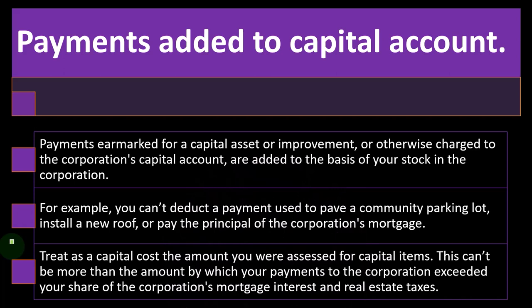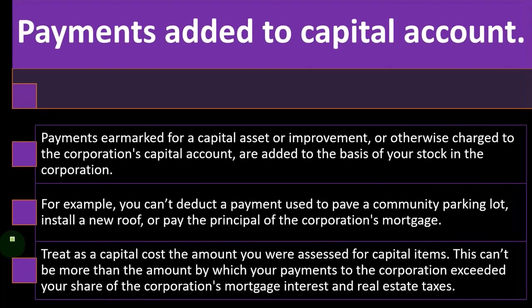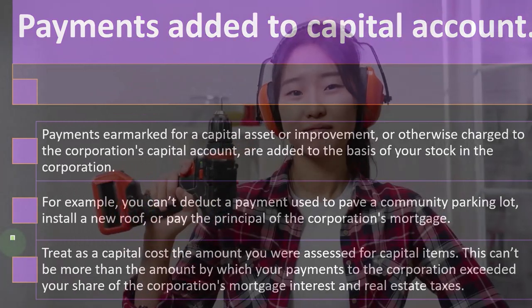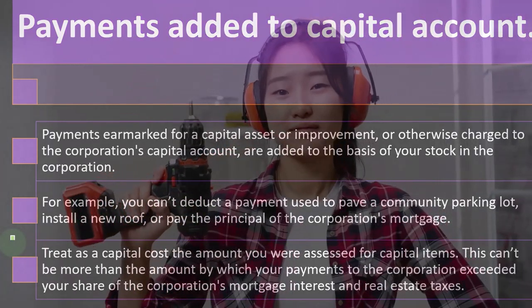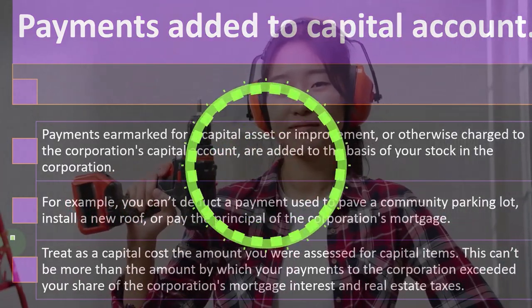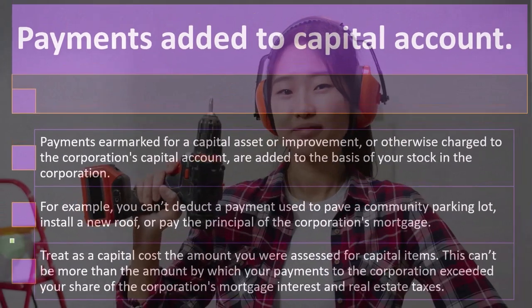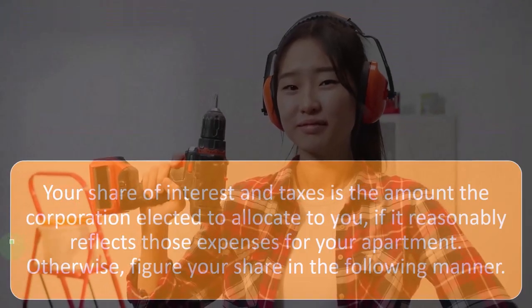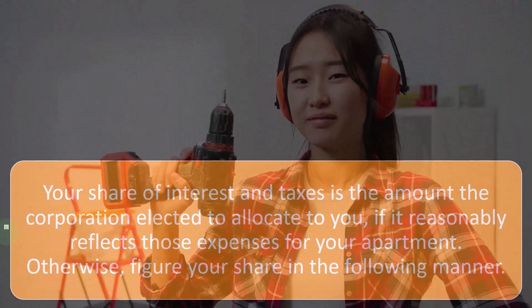So you can see where the complexity comes into play, because now you have to parse out the depreciation and figure out what that's going to be. And if there are improvements — if you're paying for improvements in the building — those would usually be capitalized items that you would need to depreciate instead of expensing at the point in time that they happen.